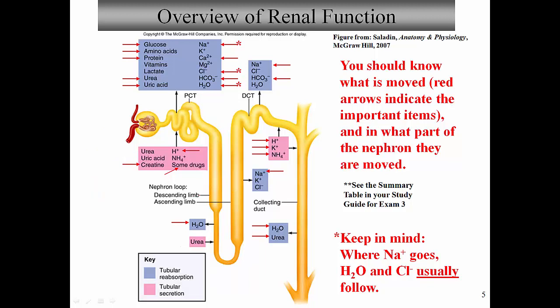In the nephron loop, we have two limbs: a descending limb and an ascending limb. In the thin portion of the descending limb, what's primarily being reabsorbed is water — notice there's no sodium or chloride in that box. We're taking water away from a solution and leaving behind the sodium and chloride, so the solute concentration increases. The coloration gets darker going down toward the bottom of the loop. Some urea is also added by tubular secretion into the fluid at the bottom of the nephron loop, further increasing solute concentration.